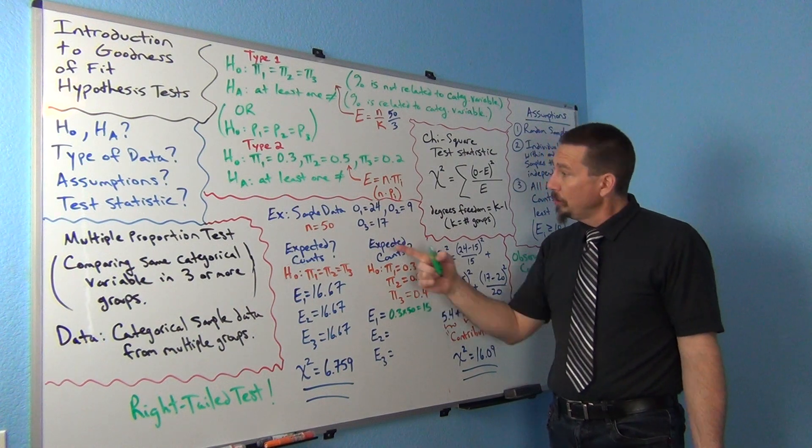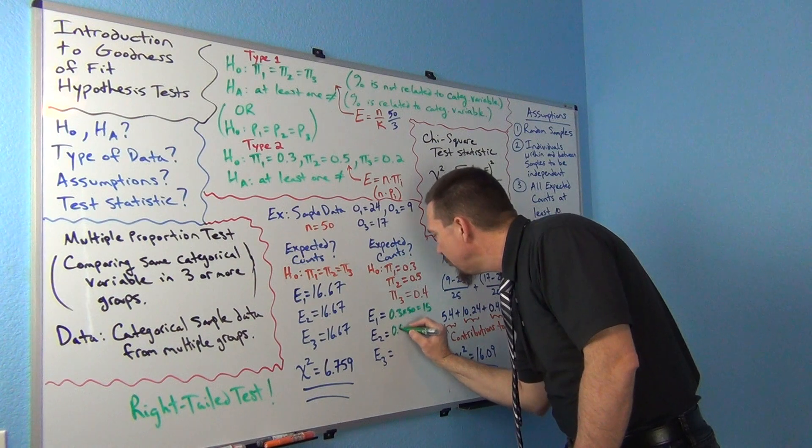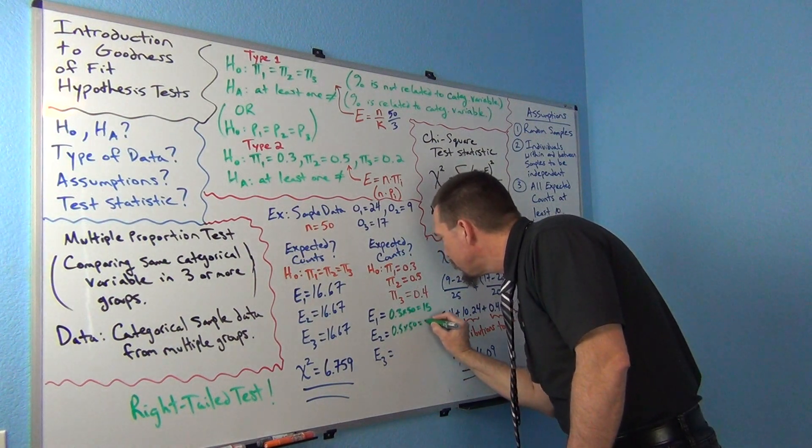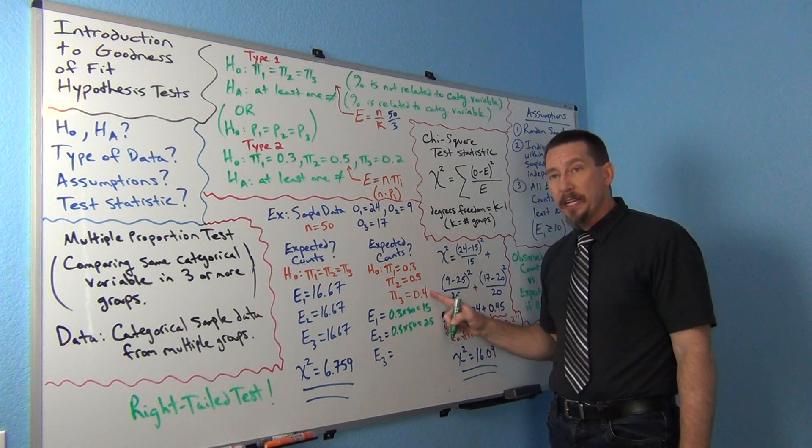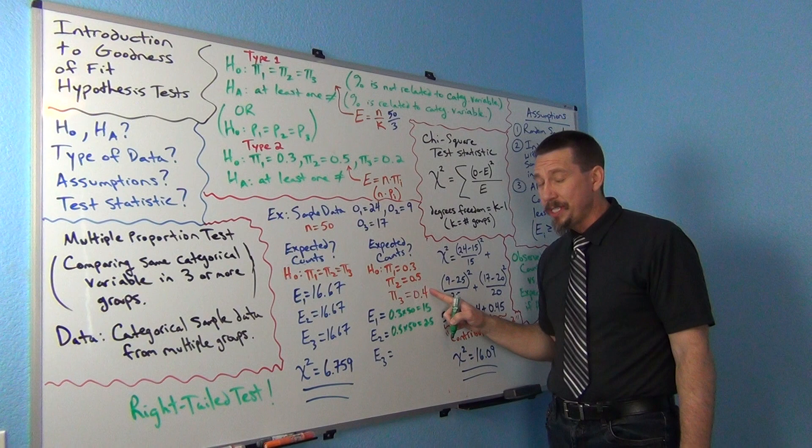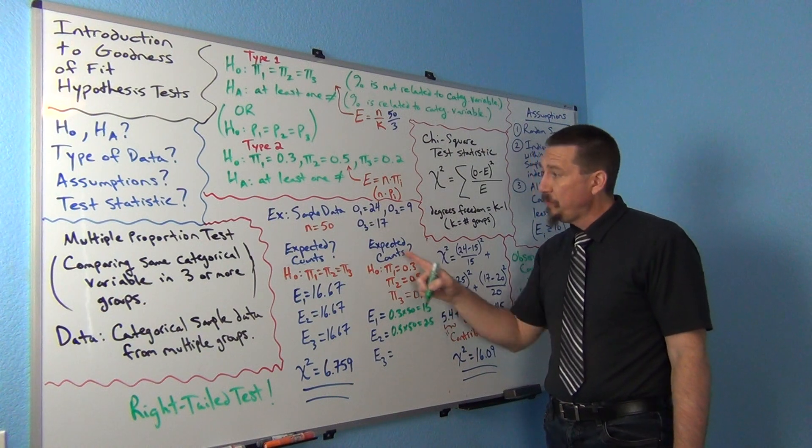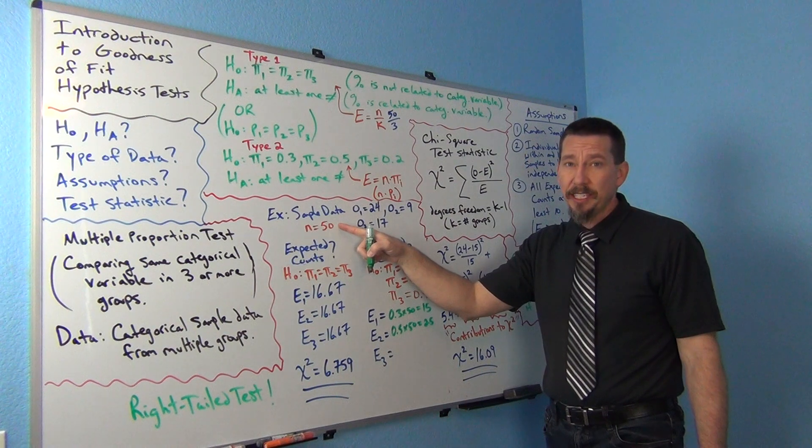To come from group 2, well that means 50 times 0.5 gives us 25. And here I expect in the null hypothesis it says that group 3 was supposed to get 40% or 0.4, so I expect 40% of my group to come from group 3.